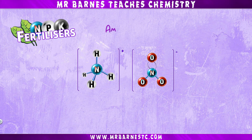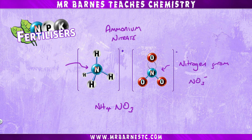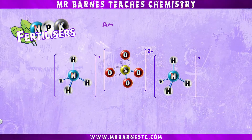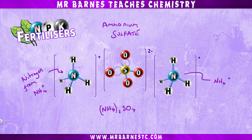Starting off with ammonium nitrate, which has the chemical formula NH4NO3 — this contains nitrogen, which is present in both the ammonium ions and the nitrate ions. Moving on to ammonium sulfate, which is another source of nitrogen again from the ammonium ions, and has the formula NH4SO4.